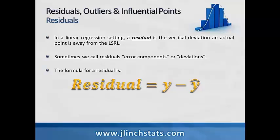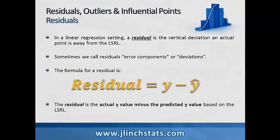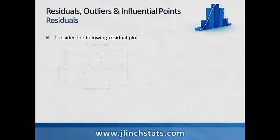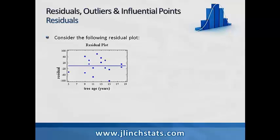Points above the least squares regression line will have a positive residual, and points below the line will have a negative residual. In this residual plot, the explanatory variable is tree age in years versus residual values (actual y minus predicted y-hat). Notice some data points have positive residuals and some have negative residuals.